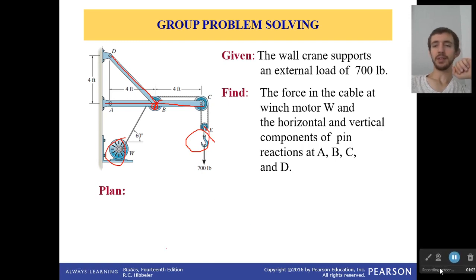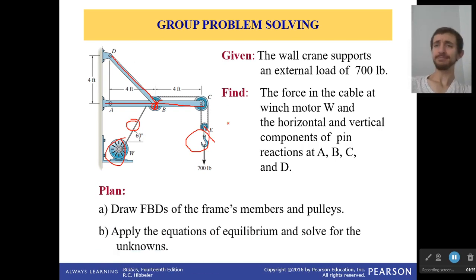Let me move this over to the side. So what you're going to do right now is try to find the force in the cable at winch motor W and the horizontal and vertical components of pin reactions at A, B, C, and D. That's a whole lot to do. Luckily for us there might be a two-force member here to make it easier. So before I send you off into the wild, here's your plan.